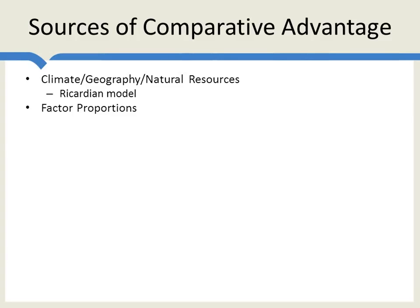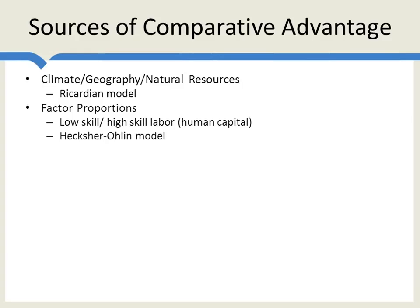Another advantage, created by the fact that labor is not internationally mobile, is that different countries have different proportions of capital to labor, or low-skill to high-skill labor — different proportions of the factors of production. Some countries have a lot of low-skill labor and have a comparative advantage in producing goods which require a lot of low-skill. Other countries have more high-skill labor and have a comparative advantage in producing, for example, aircraft, which requires a lot of high-skill. This, by the way, is the Heckscher-Ohlin model, and a lot has been written about it.